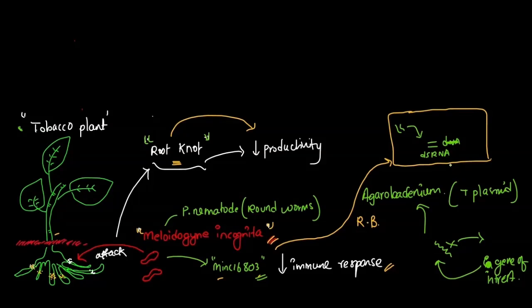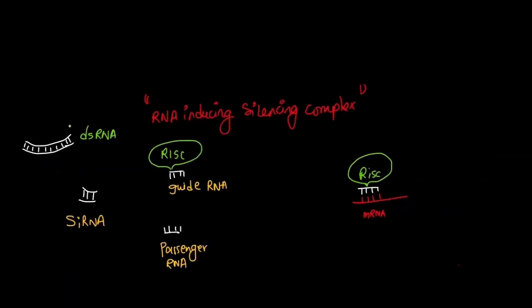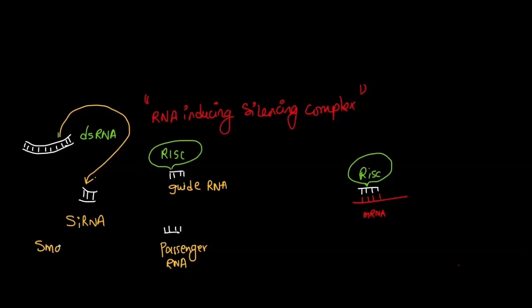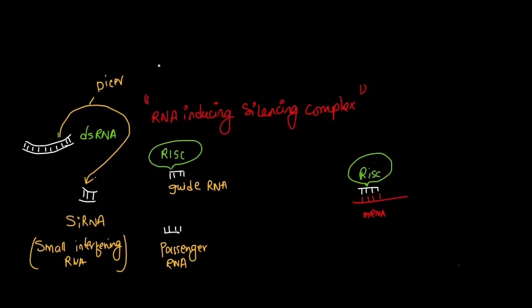it will ingest this double-stranded RNA also. Now as soon as this nematode ingests this double-stranded RNA, this double-stranded RNA will be converted into small fragments of double-stranded RNA — this is known as small interfering RNA, siRNA. This conversion is done by an enzyme called Dicer, which is actually an endonuclease.